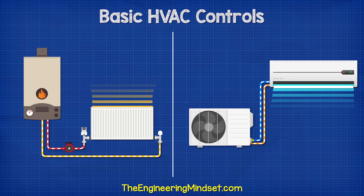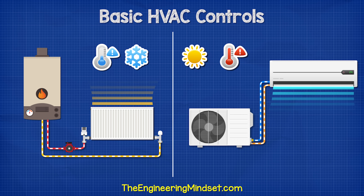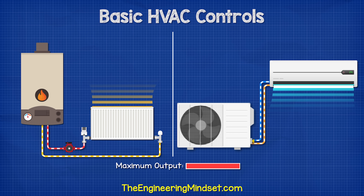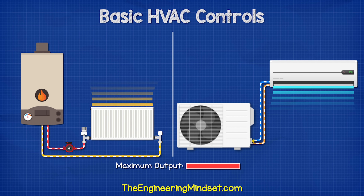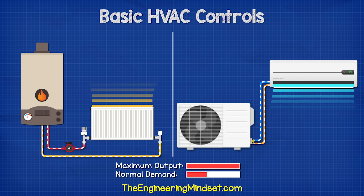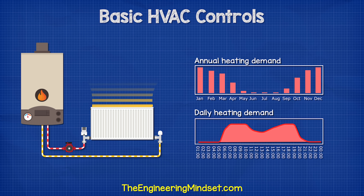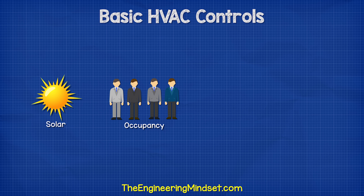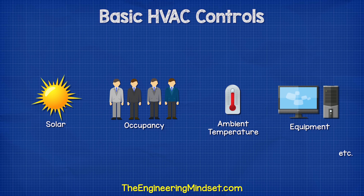We rely on our heating and cooling systems to function whenever needed, especially on the coldest and hottest days of the year when the system must operate at full capacity. To achieve this, the systems are typically oversized so that they can handle the worst-case weather scenario. However, most of the time the system will operate well below this point, at part-load conditions. The heating and cooling loads change throughout the day and also the year due to variables such as solar heat loads, building occupancy, ambient temperature, and equipment.